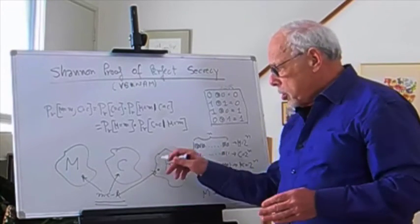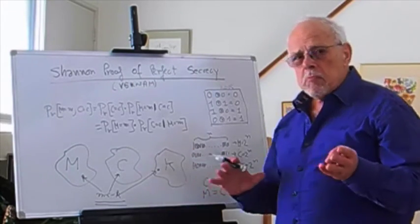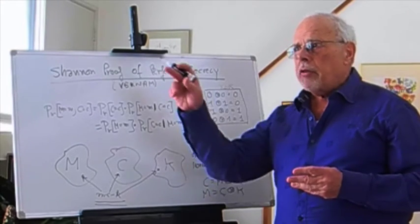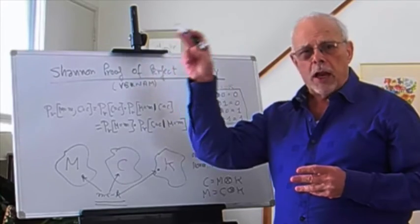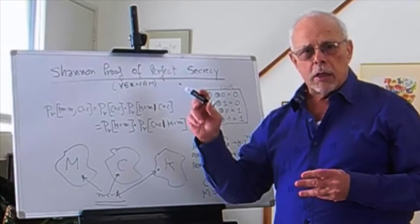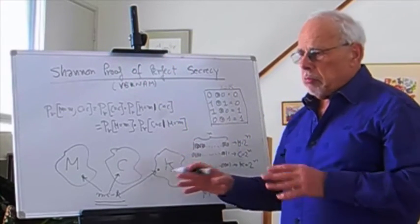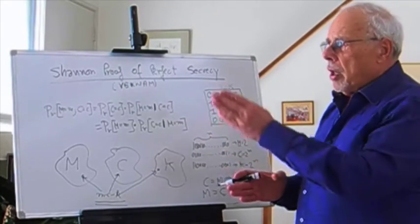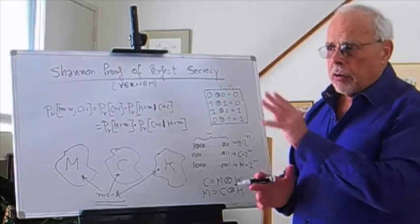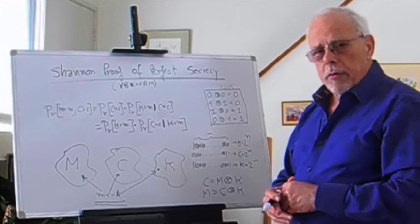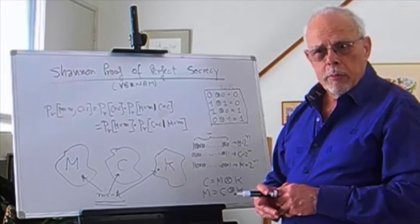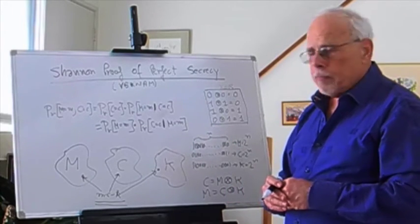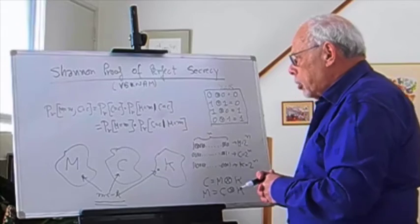If you use such a cipher as we use today with smaller key spaces, you always have to be suspicious that the other side has someone more intelligent that breaks it. If you use Vernam, you can be relaxed. You don't care if they have ten Alan Turings there on the other side—Vernam cannot be broken. Shannon proved it.